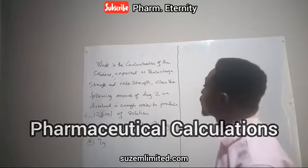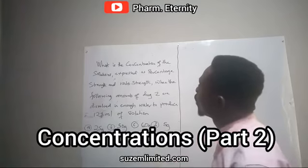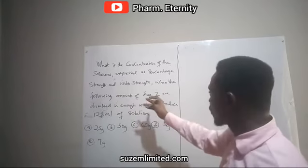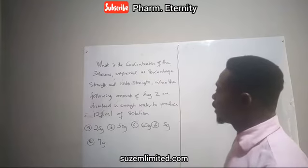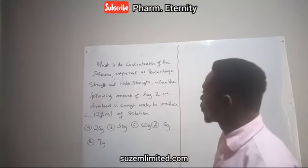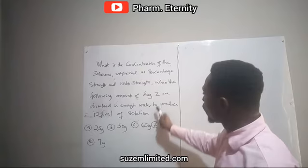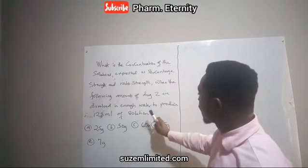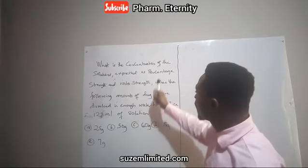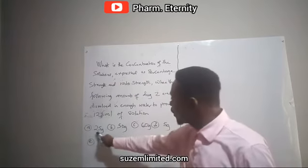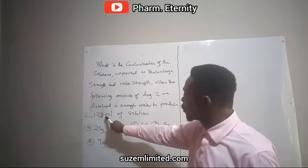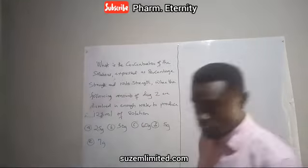The second question asks: what is the concentration of the solutions expressed as percentage strength and ratio strength, when the following amounts of drug Z are dissolved in enough water to produce 125 ml of solution? They want to know the percentage strength and ratio strength each of these amounts of drug Z will produce when dissolved in enough water to produce 125 ml of solution.